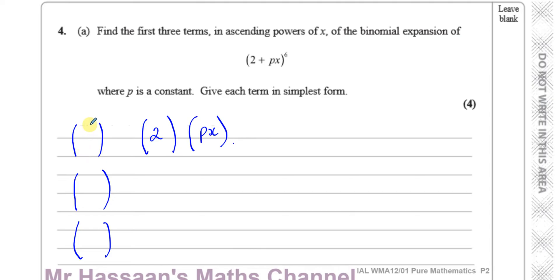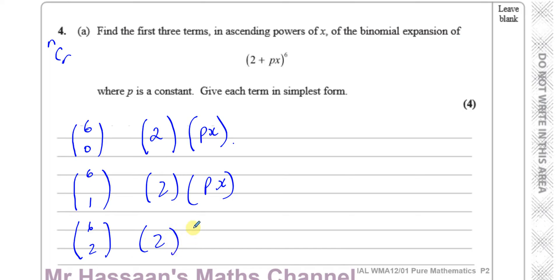So here we have NCR, where N is 6, and we start with 6C0, 6C1, and 6C2. The power on top always comes from the original power, and then you start from 0, 1, and 2. We want ascending powers of x, so Px goes in increasing powers: 0, 1, and 2. The powers on the 2 bracket go in descending order starting from 6, so 6, 5, and 4.